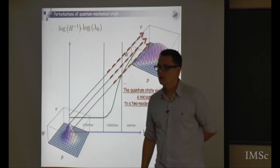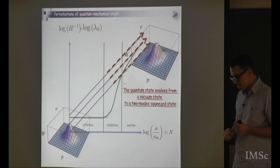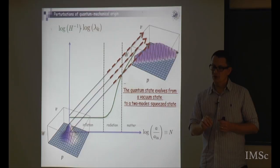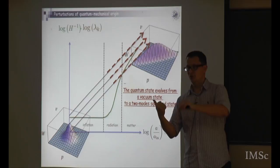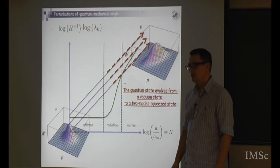The two modes in the two-mode squeezed state are modes k and minus k, because you must conserve momentum when extracting particles from the vacuum. You create pairs of particles: one with momentum k and one with minus k. This is a tensorial product of k and minus k modes, which is a state well-known in quantum optics.